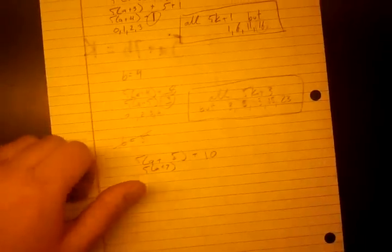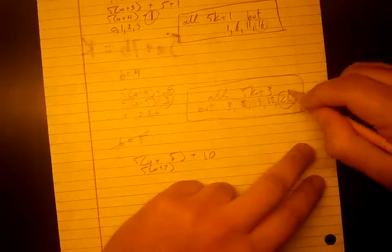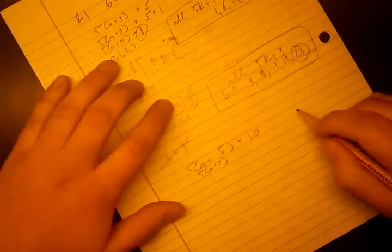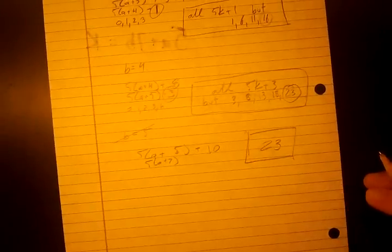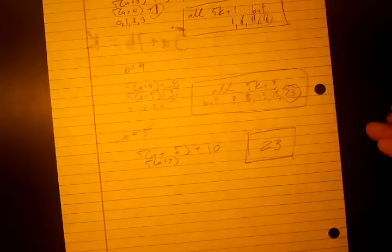And after we've done all this, what's the biggest number we can't form? It's 23. So we finished this problem, and we didn't have to list out all the numbers, luckily. And in the next video, what we'll do is we'll generalize this result and try to find a general formula for this so we don't have to go through this whole process either.